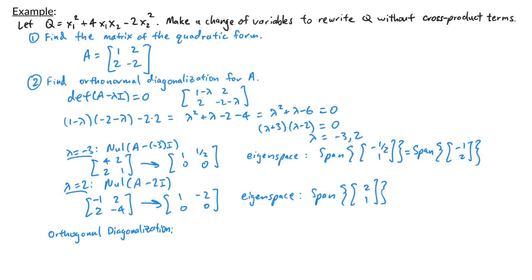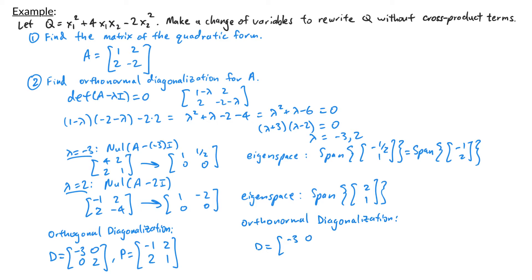For an orthonormal diagonalization, we divide the columns of P by their lengths. The diagonal matrix D has entries negative 3 and 2. The orthonormal matrix P has columns: (-1/√5, 2/√5) and (2/√5, 1/√5). Since P has orthonormal columns, the inverse of P is just P transpose.